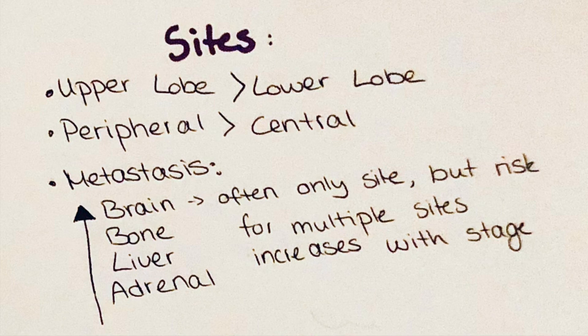When a tumor is located on the very top part of the lung, we call it a Pancoast tumor. This can invade the surrounding nerves such as those from the brachial plexus and may cause severe shoulder pain and neurological symptoms.